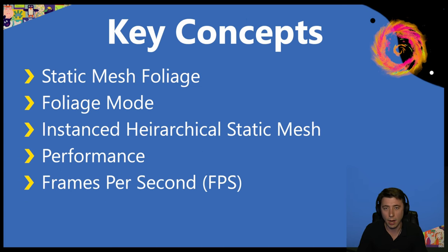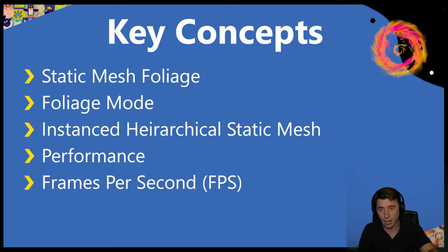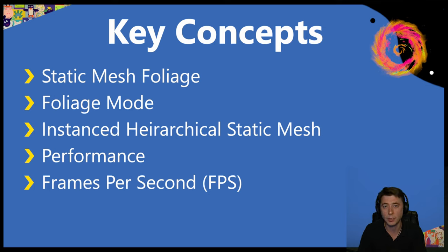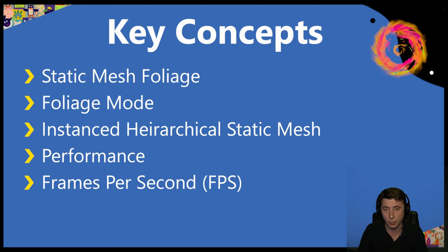Here are the key concepts for our episode today. Instanced hierarchical static meshes are what's used by the foliage editor tool for painting a single asset multiple times — sometimes hundreds if not thousands of times across the landscape — with a minimum impact to the performance of our game. That's going to tie into our next episode, which is really performance-centric, but we're going to start on it this episode.